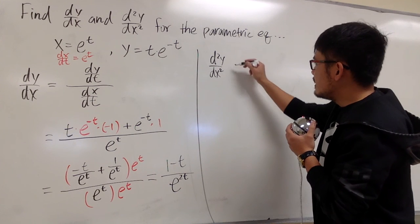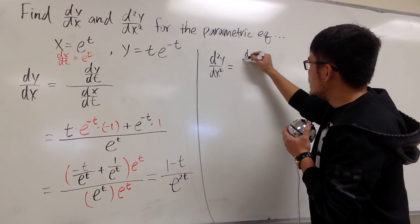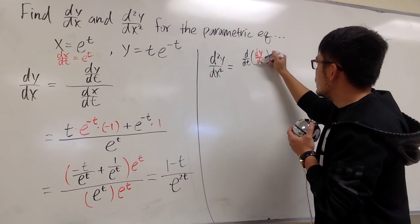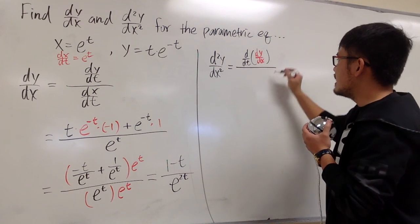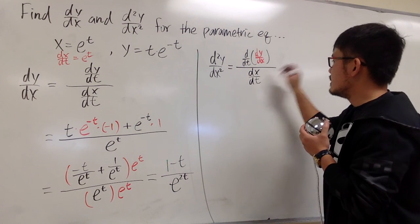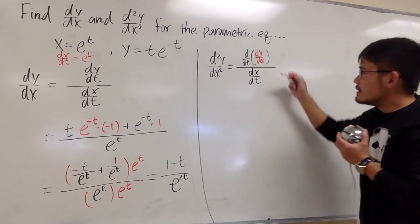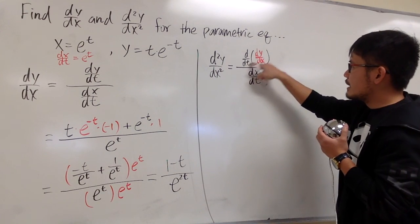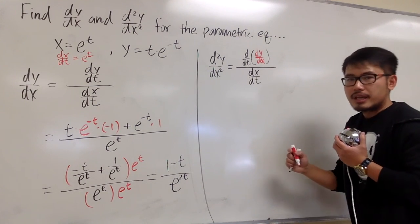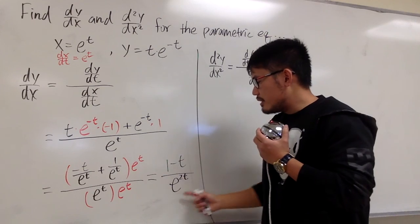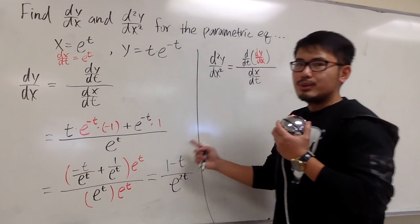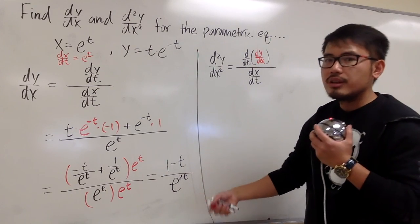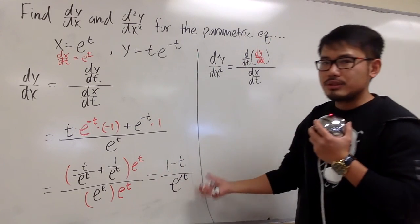Now let's find d²y/dx², which represents the concavity of the parametric curve. For d²y/dx², we take the derivative with respect to t of the first derivative dy/dx, and then divide by dx/dt. That means I look at (1 minus t) over e to the 2t and take its derivative. Since this is a quotient, we use the quotient rule.